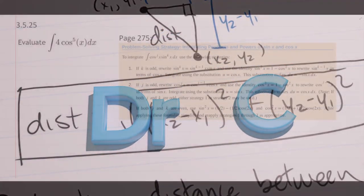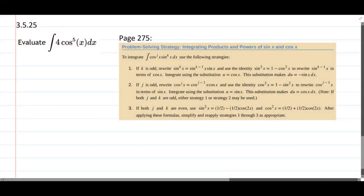This integral is cosine to the fifth. Now this four, I'm just going to pretend that it's not here. At the end, you would just multiply the whole answer by four.